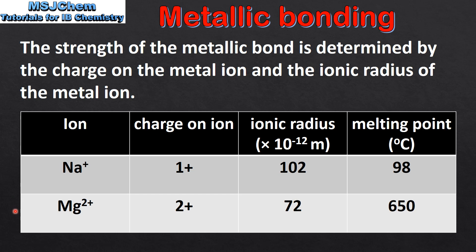Here we have two ions for comparison: the sodium ion and the magnesium ion. The sodium ion has a one positive charge and the magnesium ion has a two positive charge. Comparing the ionic radius, we can see that the magnesium ion has a smaller ionic radius. And finally, the melting point — magnesium has a much higher melting point than sodium. So the strength of the metallic bond depends on two factors: the charge on the ion and the ionic radius.